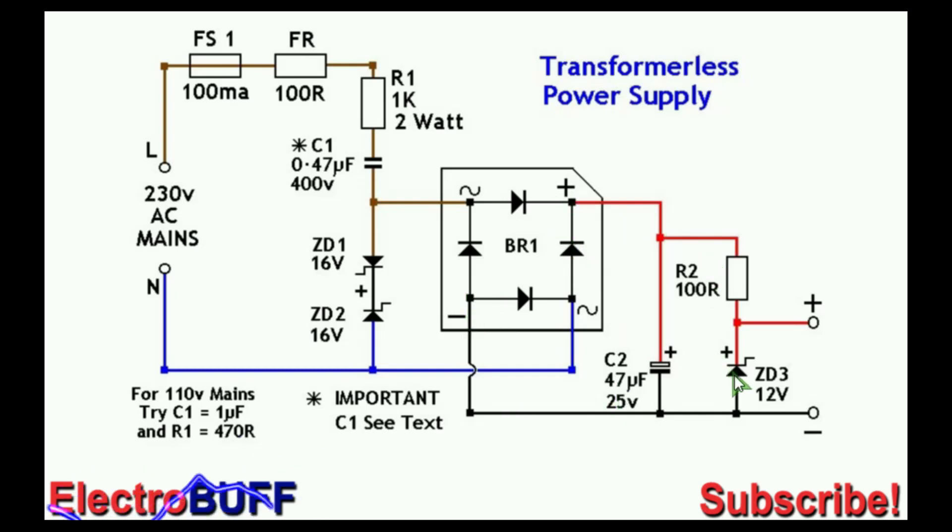At the output you have a zener diode of 12 volts. If you want 5 volts you can use a 5 volt zener diode and it should be rated at least 3 watts.